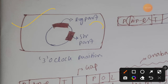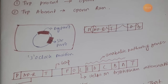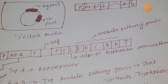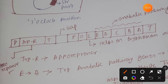Remember, in the tryptophan operon there is a gap between the regulatory part and the structural part. As a result, the regulatory part and structural part are arranged in a three o'clock position inside the cell. Up to that part is the regulatory part, and from the promoter to the terminator is the structural part.